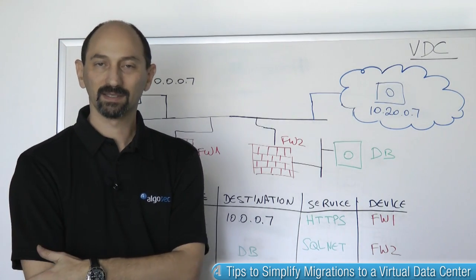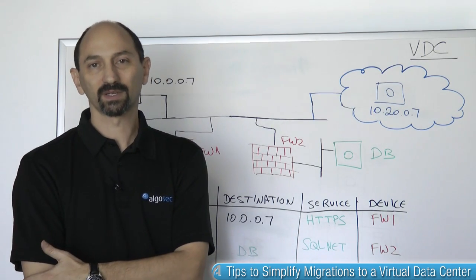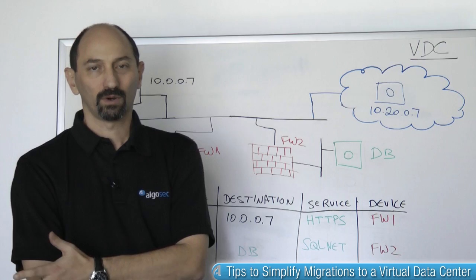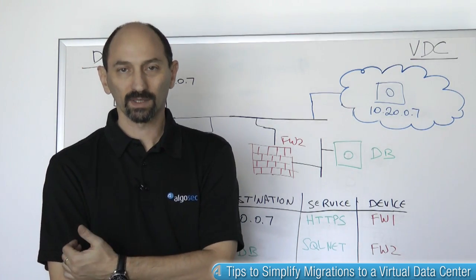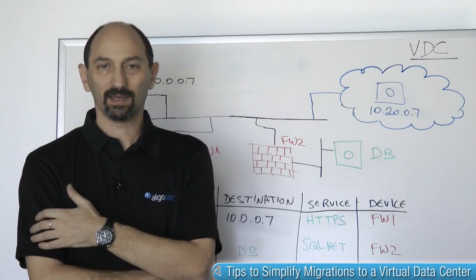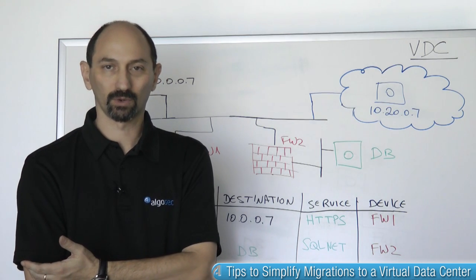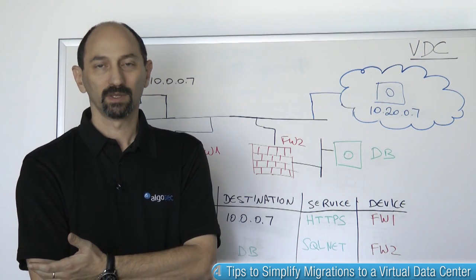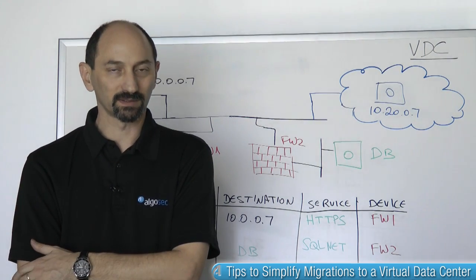The trouble is that that's easier said than done. Most organizations don't keep very good records of what every server does. It's not even obvious what applications really use that old server and what types of traffic have to reach it or exit from it. Maybe there is some information, but it might be inaccurate, out of date, or non-existent entirely.